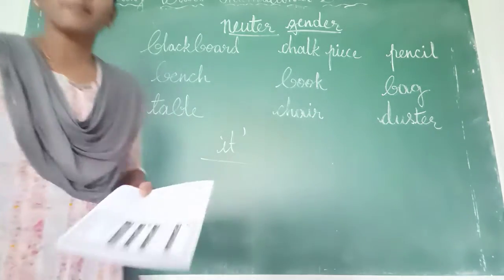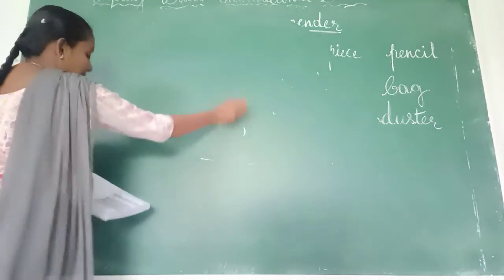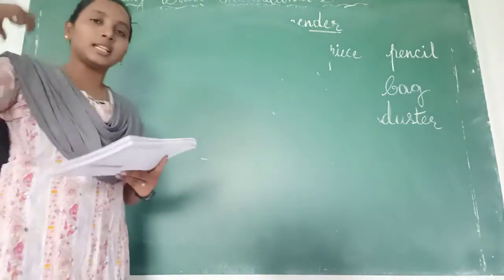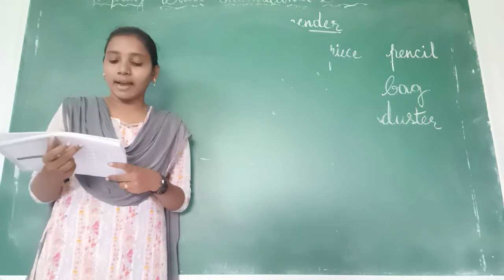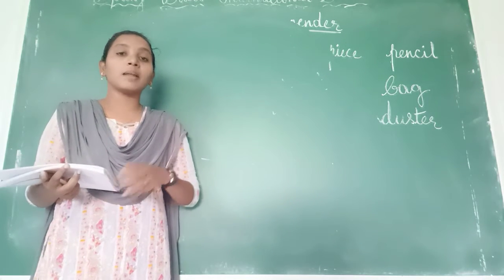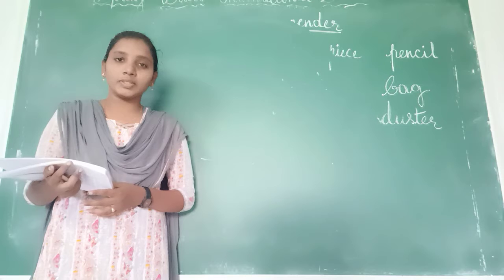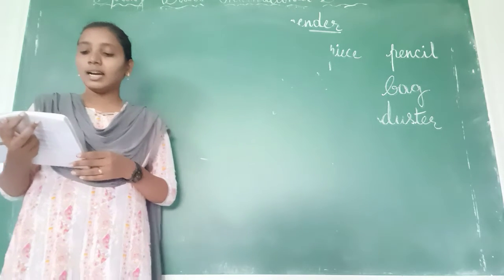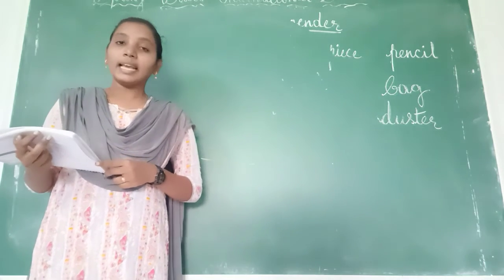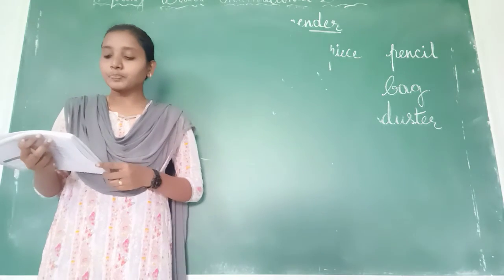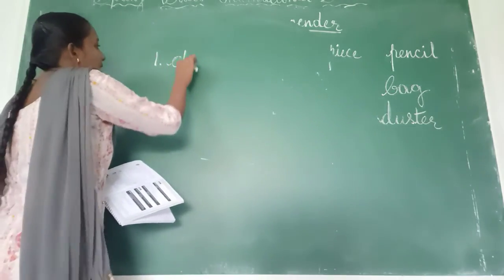Page 24. Circle the common gender nouns in the given sentences. We have to read the sentence and circle the common gender. Common gender means a name used for both boy and girl. First sentence: 'The child is playing alone in the park.' The common gender here is 'child.' Circle 'child.'